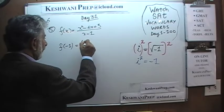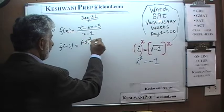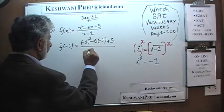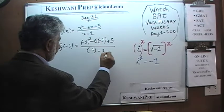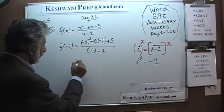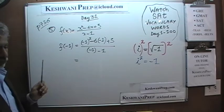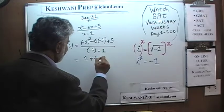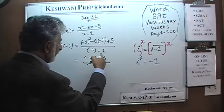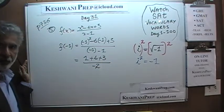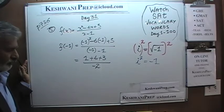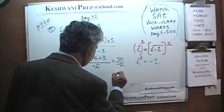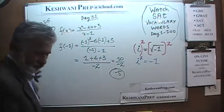So we have: x squared is negative 1 squared, minus 6 times x, plus 3, over x minus 1, plus 1. Negative 1 squared is just 1. Negative 6 times negative 1 gives us positive 6, and positive 3. The denominator is negative 1, minus 1, which gives us negative 2. At the top we get 1 plus 6 plus 3, which is 10.